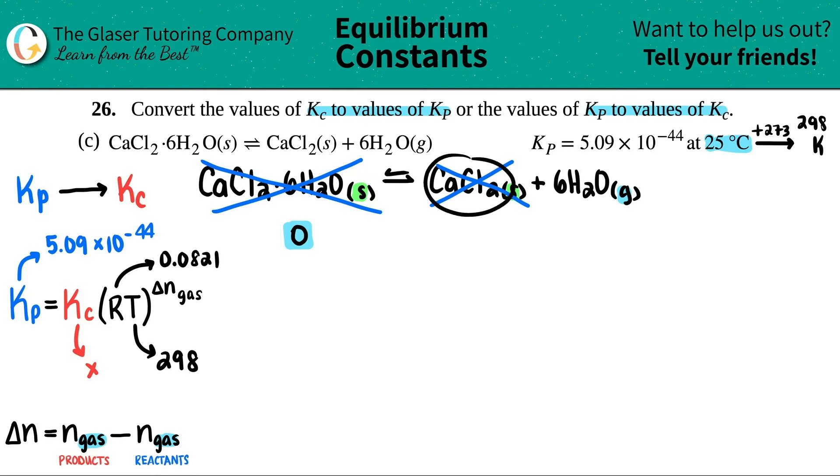Now, for this side, I'm not going to take this into consideration. But I do see that I have six moles of the gas on the product side. That's the only one. So this will equal six. So the products was a six minus the reactants, which was a zero. Six minus zero is six. And that's the number that I'm going to raise the RT to.